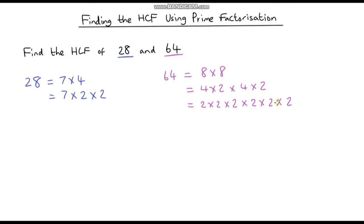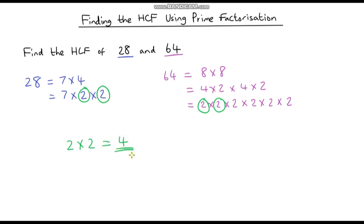Now we've broken the numbers down into the products of their prime factors, we can identify what prime factors they have in common. They both have a 2, and another 2 — so they have 2 times 2 in common. 28 has a 7 but 64 doesn't, and 64 has extra 2's but 28 doesn't. So the highest common factor is 2 times 2, which is 4 — the same answer as the listing method.